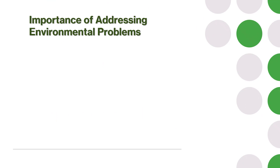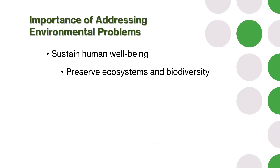So why should we understand and address environmental issues? Firstly, to sustain human well-being — a healthy environment is vital for our well-being, health, and quality of life. Secondly, to preserve ecosystems and biodiversity, protecting the environment ensures the survival of diverse species and ecosystem services. Thirdly, to secure a sustainable future — by addressing environmental problems we can create a sustainable future for present and future generations.